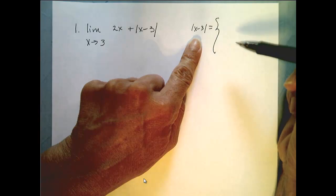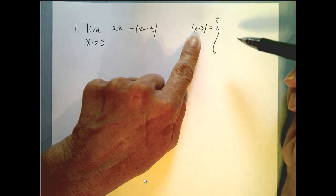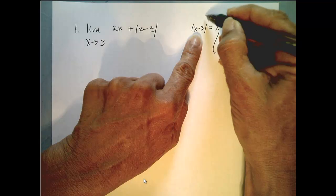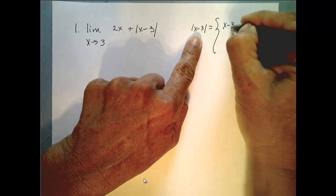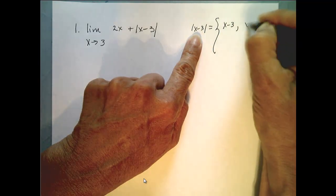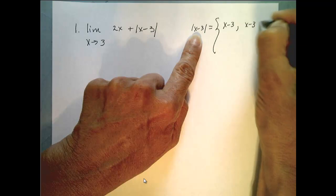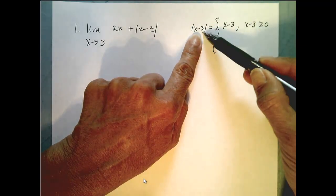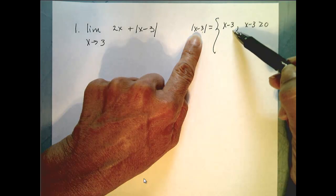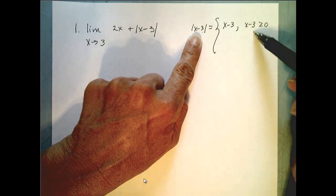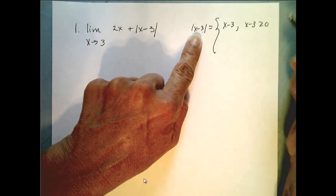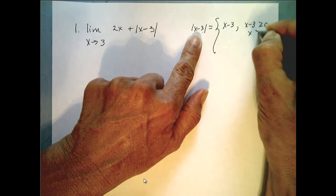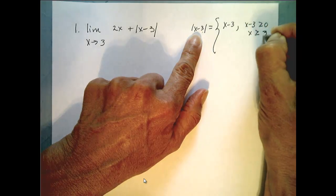Remember, the absolute value of a function: what's inside comes out if what's inside is greater than or equal to zero. So the absolute value of x minus 3 equals x minus 3 when x minus 3 is greater than or equal to zero, which is true when x is greater than or equal to 3.